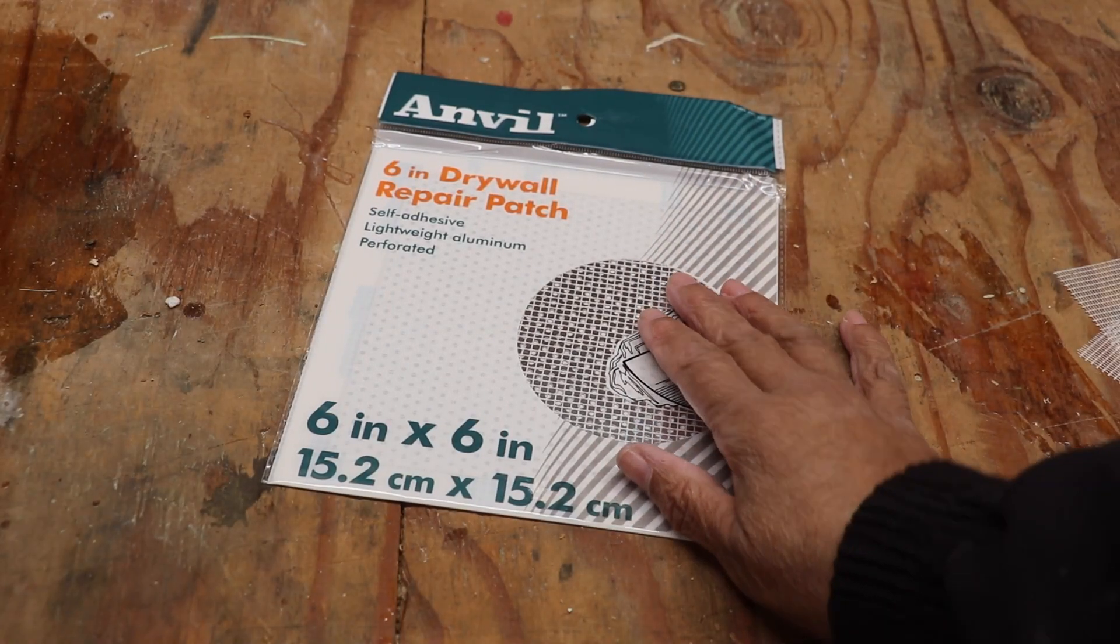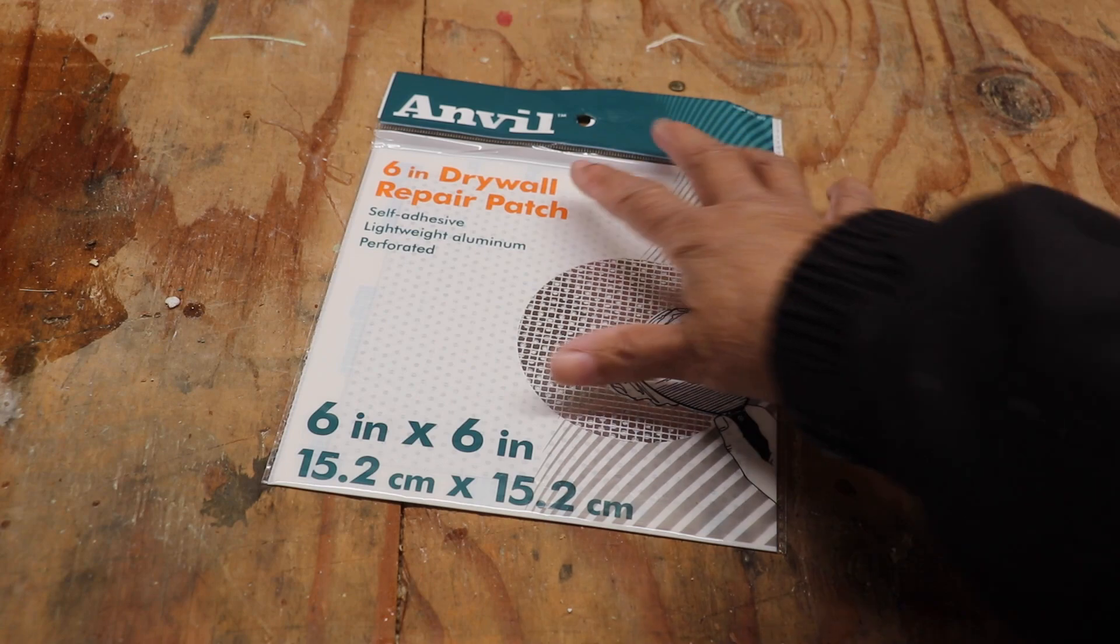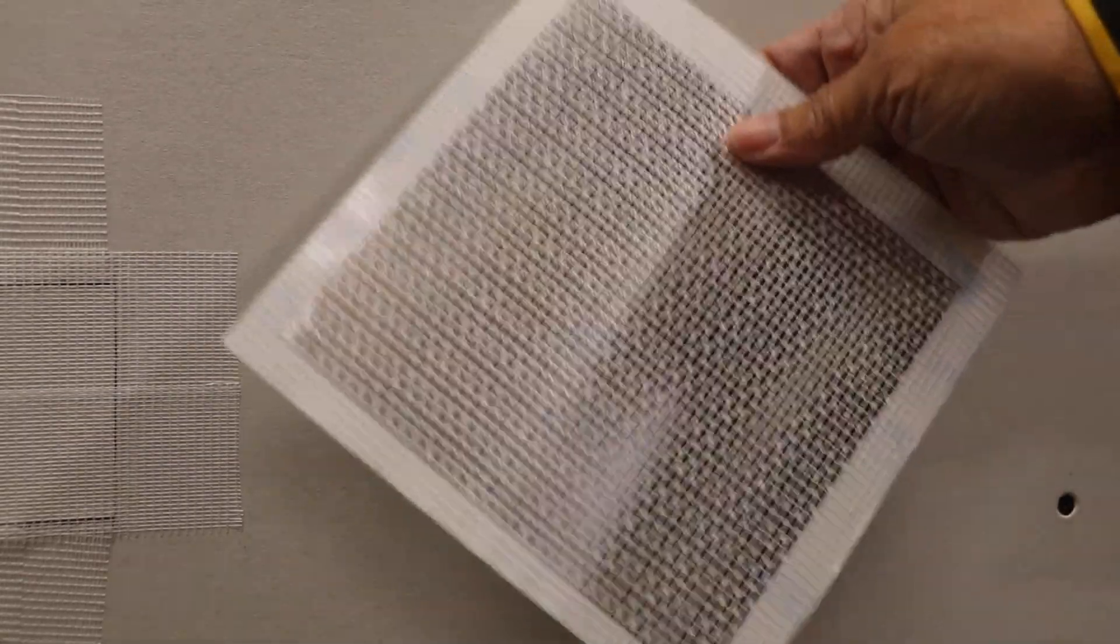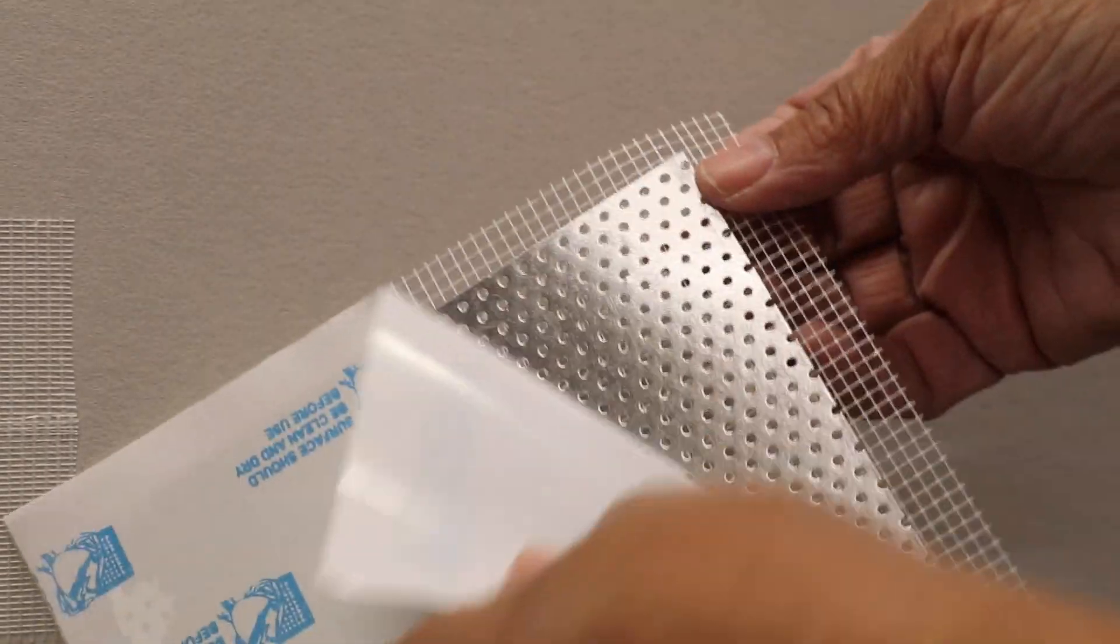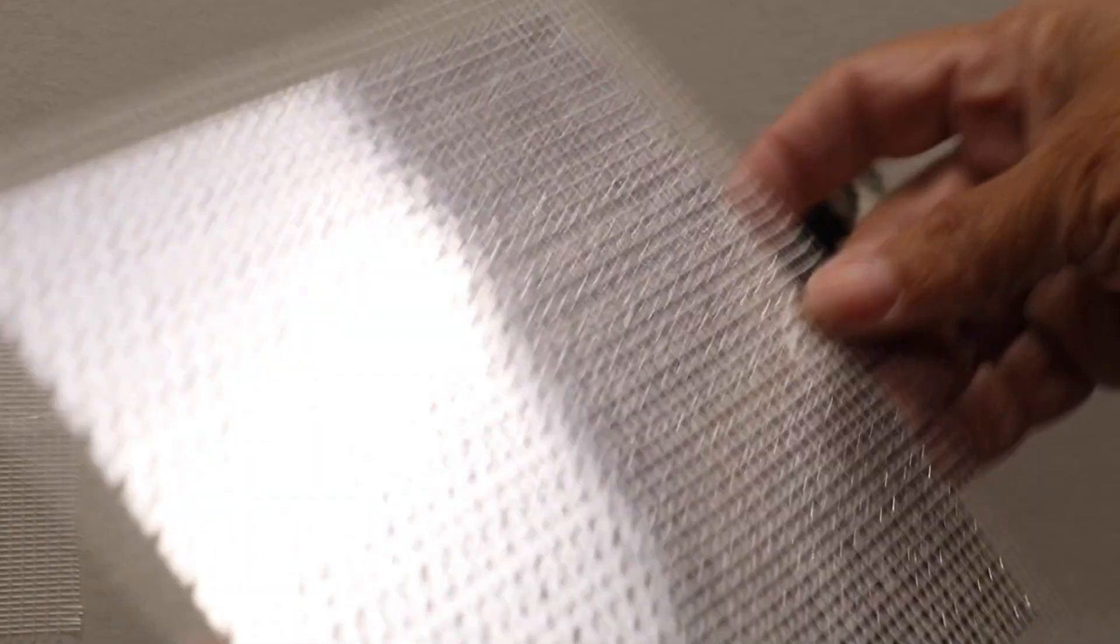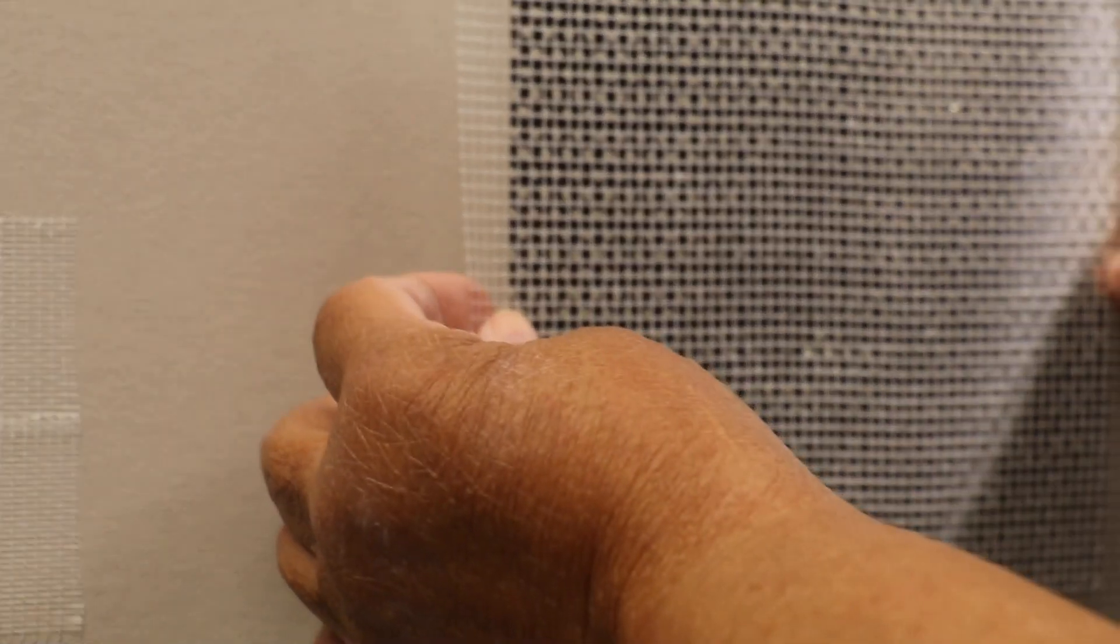Now for our next hole we're going to use a product that's store-bought. It's by Anvil and what it is is lightweight aluminum that will adhere to the surface of the drywall. You simply peel off the back side and now we're just going to apply it over the hole and you want to press firmly.